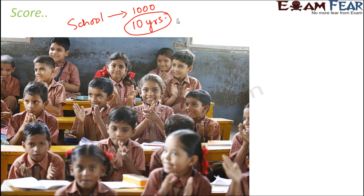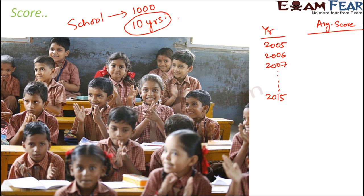From all that data, you will have to find out the average score for every year. For every year starting from 2005, 2006, 2007, and so on up to 2015, you find the average score by looking at the scores of all the students for that particular year. In 2005, all those thousand students might have scored something — somebody scored 40, somebody 60, somebody even 90 — giving an average of say 50%. For 2006 it might be 55, for 2007 it might be 69, and so on.